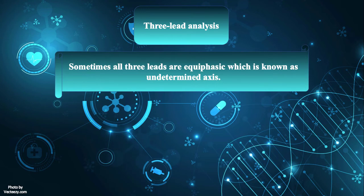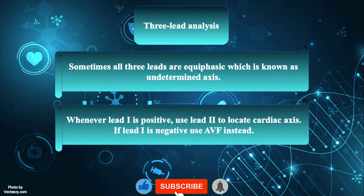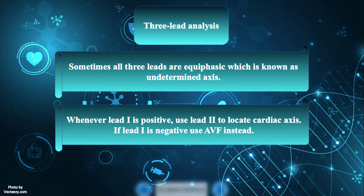Sometimes all three leads 1, 2, and AVF are equiphasic. In this situation, the heart axis is undetermined. To summarize: whenever lead 1 is positive, use lead 2 to locate the cardiac axis. If lead 1 is negative, use AVF instead.